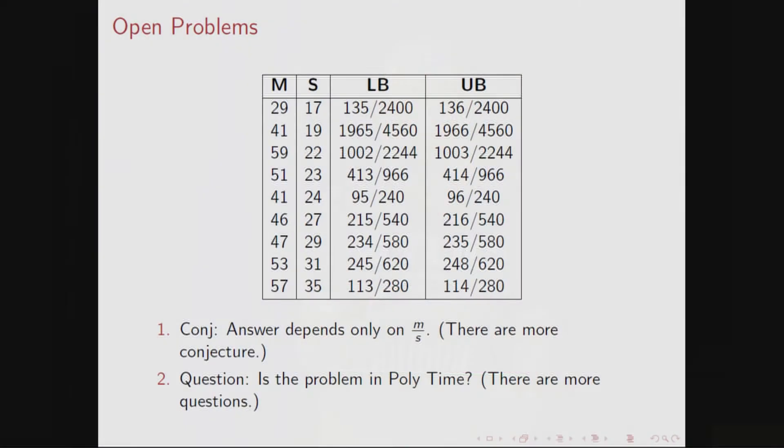And also, here are the open problems. Muffins, students, lower bound, upper bound. So for example, 41 muffins, 19 students. We can do 1965 over 4560. We can't do 1966 over 4560. And we do not know where the truth lies.